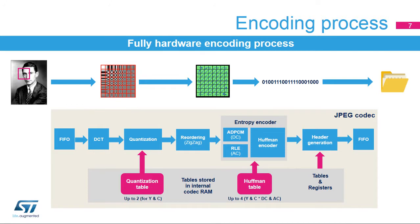The encoding process works in a similar way. If the header needs to be generated, the internal tables are copied into the output FIFO with the relevant JPEG markers. Once generated, the picture data to be compressed are sent through the input FIFO by 8-by-8 pixel blocks.